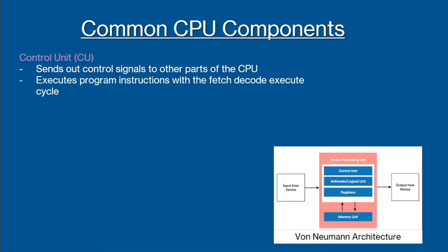Firstly, we have the control unit. This controls the flow of data inside the CPU. It sends out control signals to other parts of the CPU, executes program instructions with the fetch-decode-execute cycle, and is made of two parts: the clock and the decoder.